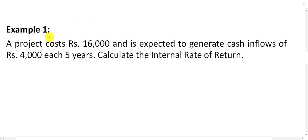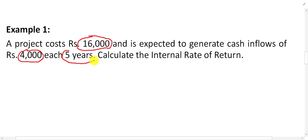Let us take a simple example for internal rate of return. A project costs 16,000 and is expected to generate cash inflows of 4,000 each year for the next 5 years. Calculate the internal rate of return. The cost of the project or initial investment is 16,000, and this project generates 4,000 per year for the next five years.